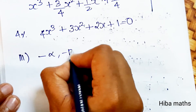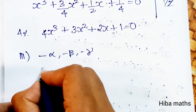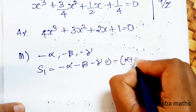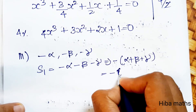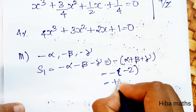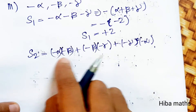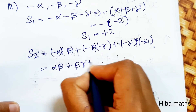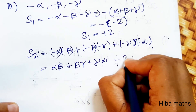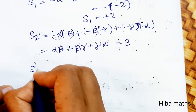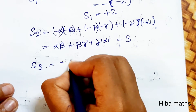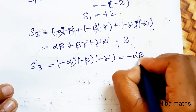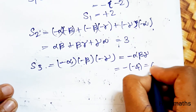For the third sub-division, roots are −α, −β, −γ. S1 = −α − β − γ = −(α + β + γ) = −(−2) = 2. S2 = (−α)(−β) + (−β)(−γ) + (−γ)(−α) = αβ + βγ + γα = 3. S3 = (−α)(−β)(−γ) = −αβγ = −(−4) = 4.